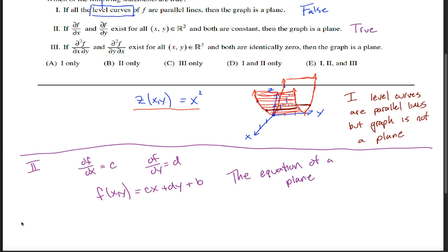Statement 2 is a true statement. Finally, statement 3. Statement 3 says the mixed partial derivatives exist and are both identically zero. And the question is, does that imply that the graph is a plane?